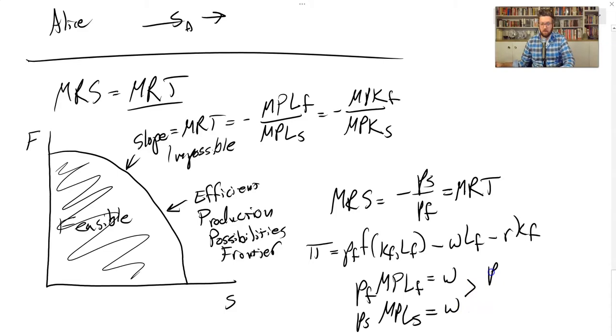Let's rearrange them one more time first. This can be rewritten as price of food is equal to W over the marginal product of labor for food. And this can be written as price of shelter is equal to W over the marginal product of labor of shelter, just dividing both sides by those marginal products.